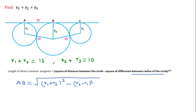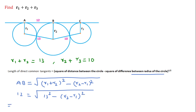AB is equal to 12 units and according to the question r1 plus r2 is 13, so 13 squared. After squaring both sides we can write 12 squared equal to 13 squared minus r2 minus r1 whole squared. If we solve this, we can write 144 and 169.